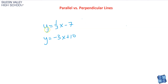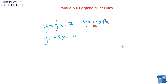Here are two more lines in y equals mx plus b form. The b does not matter for determining parallel or perpendicular — you don't care at all about the y-intercept. Looking at the slopes: the first slope is 1/3, and the second slope is negative three. Remember, every slope is essentially a fraction, so a whole number like negative three can be written as negative three over one.